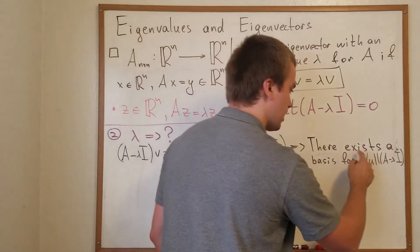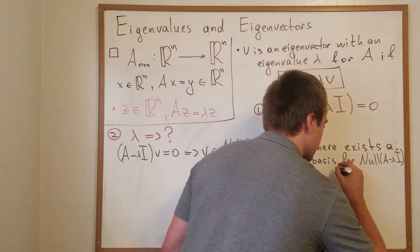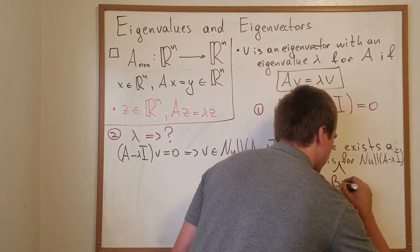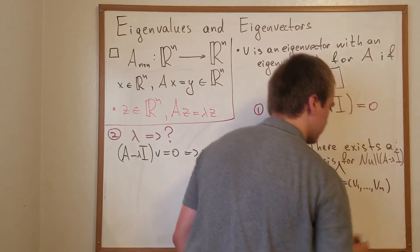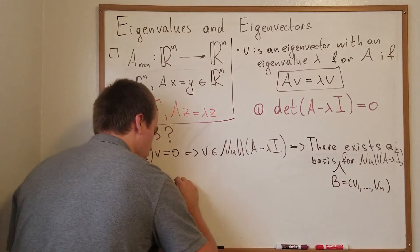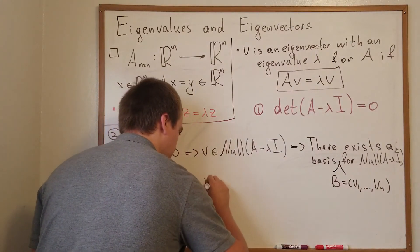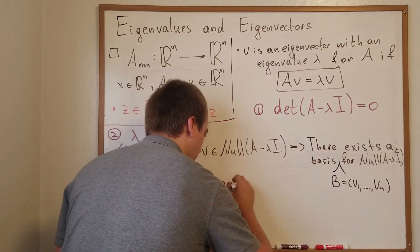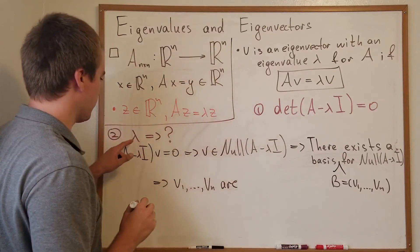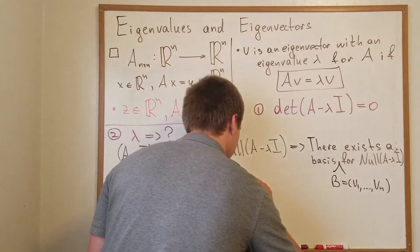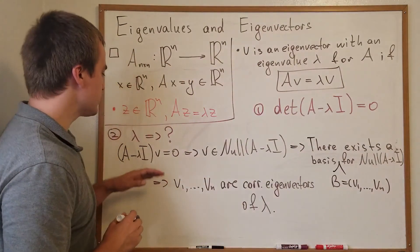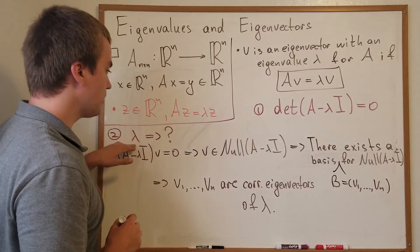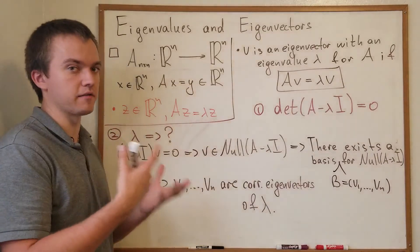So in this case, if there's an existing basis, let's say B consists of vectors v1 and vn, then from here we're going to follow that v1 and vn are corresponding eigenvectors of λ. So we can see that for corresponding λ, we can have more than one eigenvector.